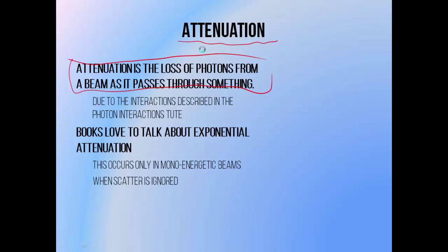Attenuation happens as a result of the photon interaction types we talked about in the last tutorial, such as the photoelectric effect and Compton scattering. If you look at any medical physics textbook chapter on attenuation, we're going to talk about exponential attenuation. Basically, what this looks like is that the intensity of your beam — the number of photons inside it — varies with the depth travelled through a medium in a fashion that looks like this.